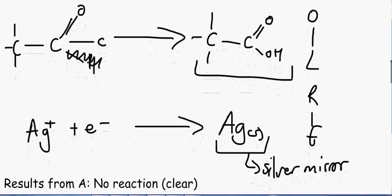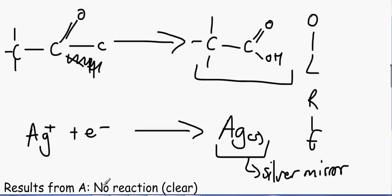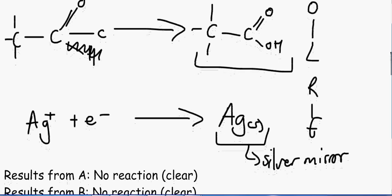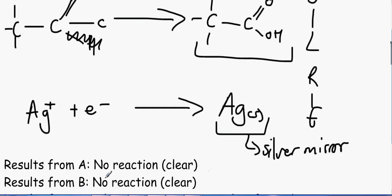So from the results, results from A, as expected, there's no reaction. We have no, it's just clear. Results from B, is that there is no reaction. So using that information, we know that this is a ketone.